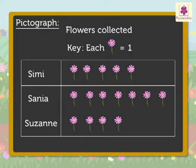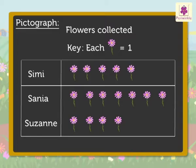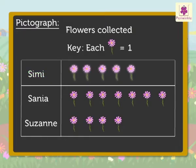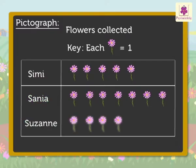Now, let's see how we can read this pictograph of the flower farm example. The title, 'flowers collected,' tells us the pictograph is about the number of flowers collected. The labels give us the information of who collected the flowers. The key tells us that each flower picture is equal to one flower. Hence, from the pictograph, we can say Simi collected five flowers, Sanya collected seven flowers, and Suzanne collected four flowers.